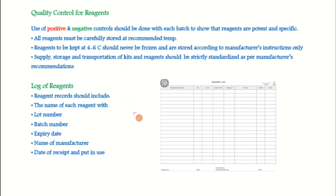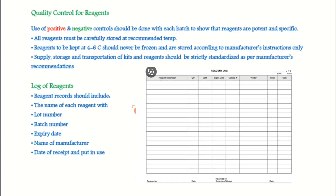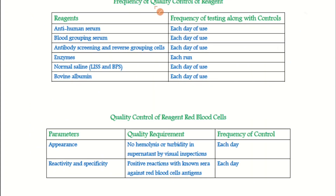Regarding reagent log sheets, the records should include the name of each reagent with lot number, batch number, expiry date, name of the manufacturer, date of receipt, and date put in use. For frequency of quality control: anti-human serum should be checked each day of use, and blood grouping serum also each day of use.